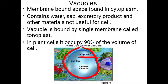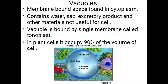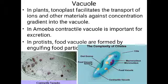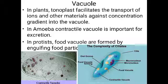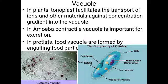In plant cells, vacuoles can occupy up to 90 percent of the volume of the cell. In organisms like Amoeba, a contractile vacuole is present, which is important in excretion — excretory waste can be stored and eliminated. As seen in the picture, the contractile vacuole in Amoeba helps in excretion.